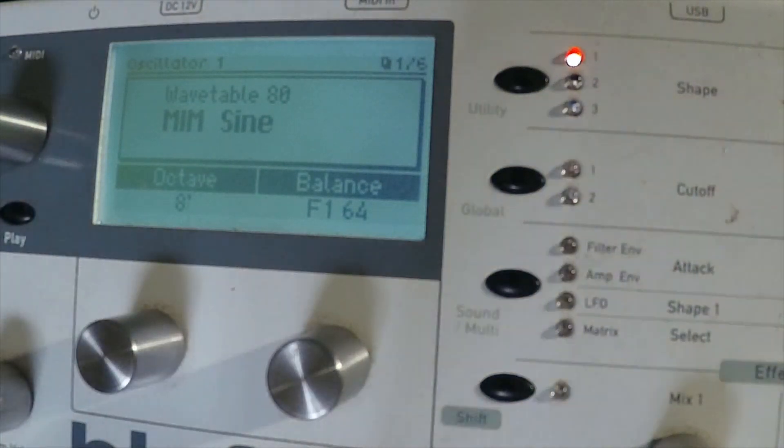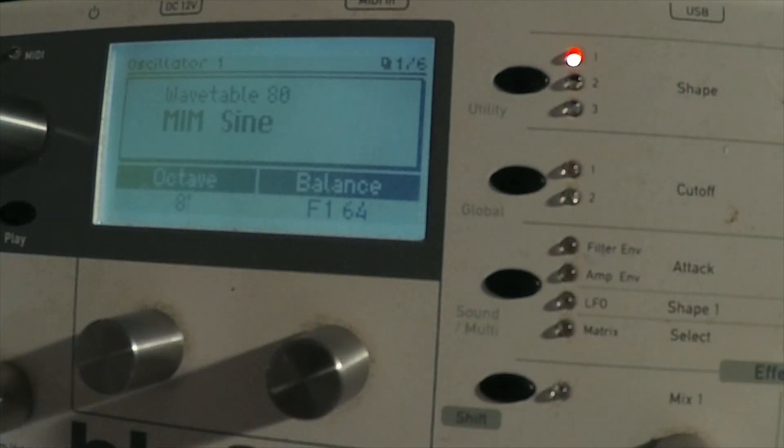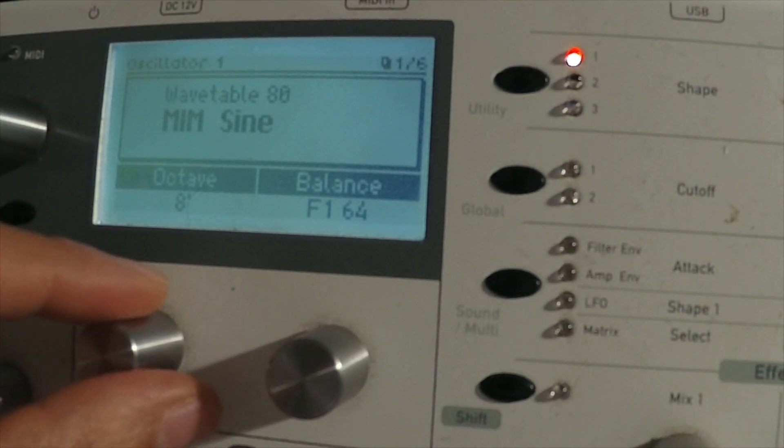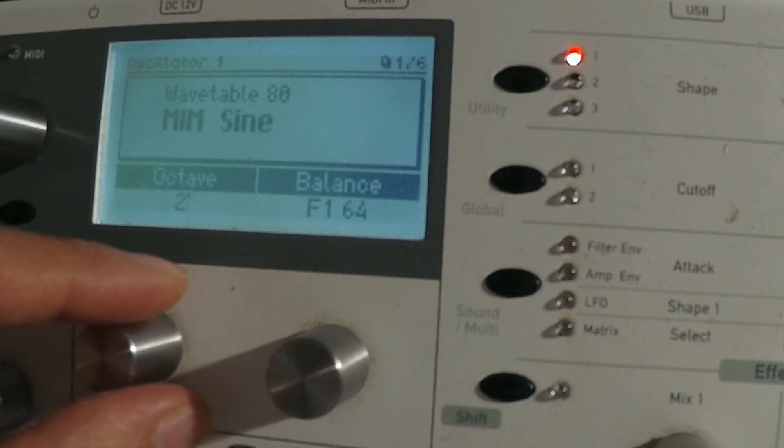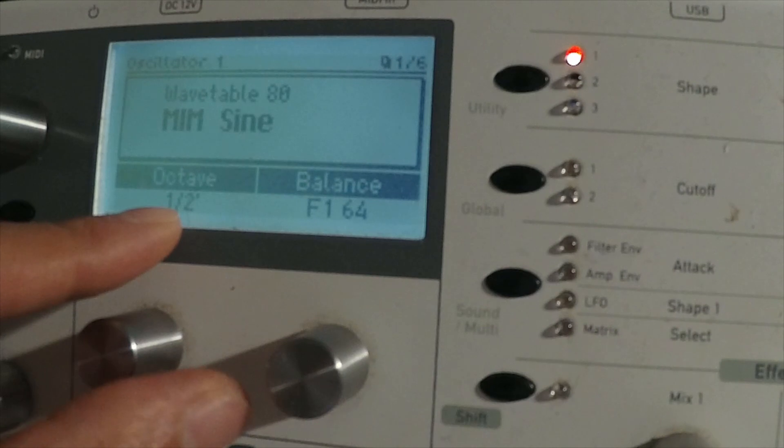So what's happening when you change the footage is you are actually changing the amount of modules that you have. Right now at 8 foot you only have one. When you turn it to 4 you have 2, when you turn it to 2 you have 4, when you turn it to 1 you have 8, and when you turn it to this you have 16.